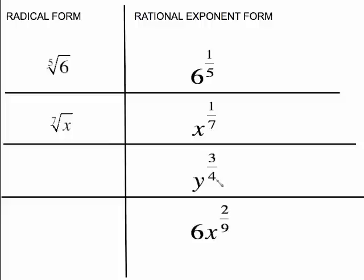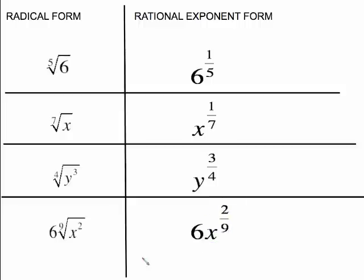The 4 on the bottom is your index, with y cubed on the inside. Now be careful here — this 6 is not being raised to the 2/9 power. It's just a plain coefficient that remains outside the radical. So it is 6 times the 9th root of x squared. When you write this, be careful that you write the index small enough so it's inside the radical symbol — don't float it out so far that it looks like 6 to the 9th, which it's not.